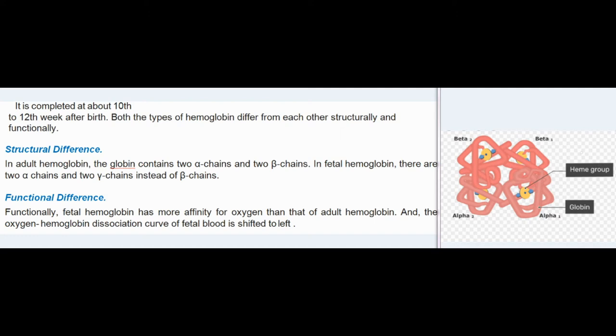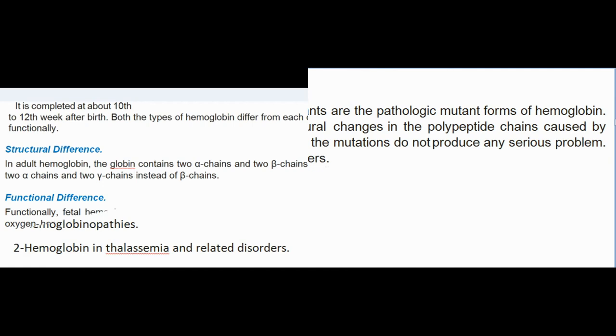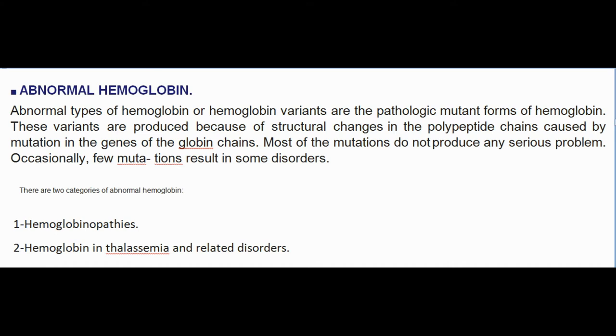Both types of hemoglobin differ structurally and functionally. Structural difference: in adult hemoglobin the globin contains two alpha chains and two beta chains; in fetal hemoglobin there are two alpha chains and two gamma chains instead of beta chains. Functional difference: fetal hemoglobin has more affinity for oxygen than adult hemoglobin, and the oxygen-hemoglobin dissociation curve of fetal blood is shifted to the left.